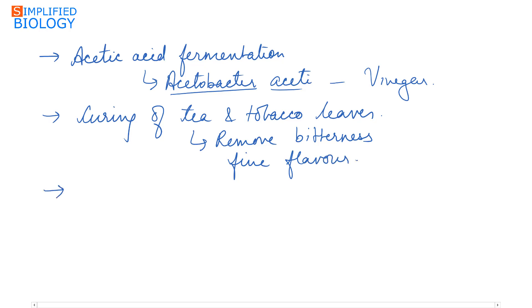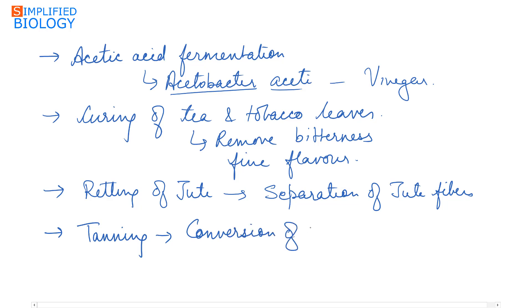Fermentation is also used for retting of jute during the separation of jute fibers. Fermentation is carried out to remove the softer parts of the plant or cells attached to the fiber. Fermentation is also used in tanning, the conversion of hides into leather. Hides are animal skin. When they are converted into leather, they first undergo fermentation. These are the different uses of fermentation.